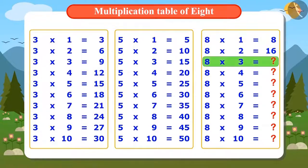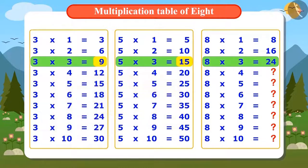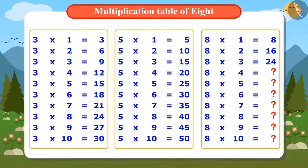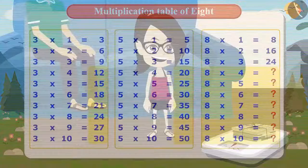To find the answer of 3 times 8, let's add 9 and 15. The answer is 24. In the same way, by adding all the corresponding numbers of the 3 and 5 multiplication tables one by one, we can find the entire multiplication table of 8.